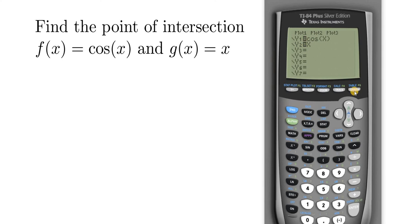Once you've entered the functions, the next step is to hit the graph key. So I'm going to go ahead and press the graph button. Okay, and there's our wave function - that's the cosine function, and that's the line y equals x. And you see there is exactly one point of intersection.